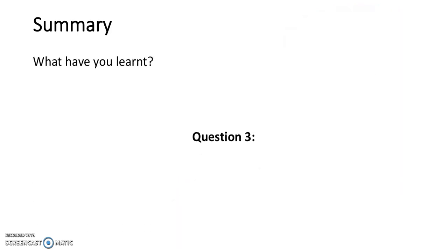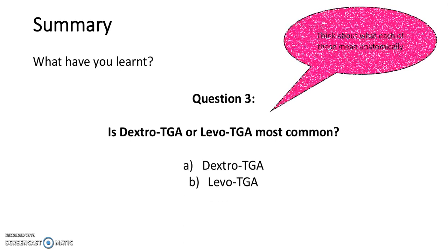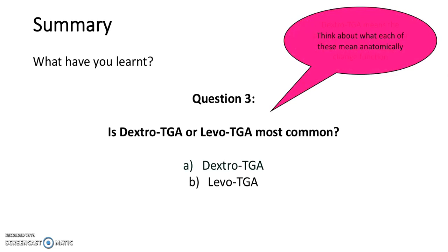Question 3: Is dextro-TGA or levo-TGA most common? A, dextro-TGA; B, levo-TGA. The answer is A, dextro-TGA.